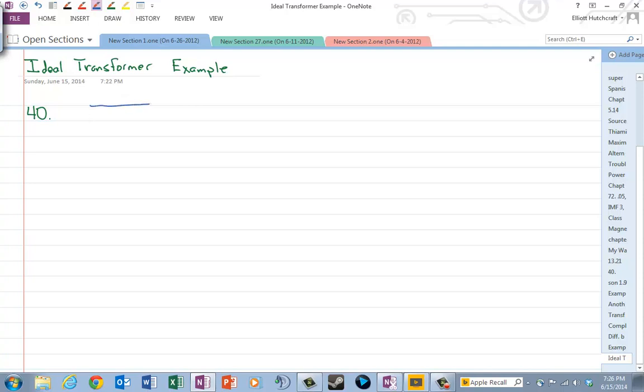So let's say we have a transformer here. Notice it looks sort of like two inductors back to back. Typically you'll see these double lines here for the ideal transformer setup.